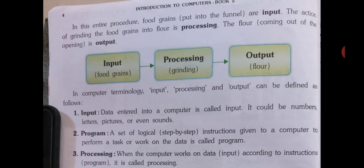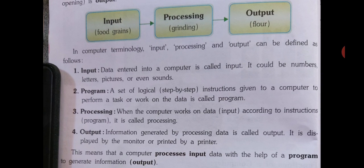To simple diagram di hoi hai — isko box diagram kehte hai. Input hai — input ke baad food grains, matlab input dala jata hai, processing mein grinding hota hai example ke hisaab se diagram di hoi hai. Output ke niche floor diya gaya hai. In a computer, technology input, processing, and output can be defined as follows — toh computer technology mein input, processing, aur output ko kya bataya jata hai woh dekhte hai.